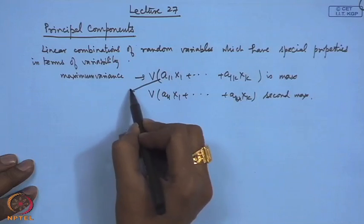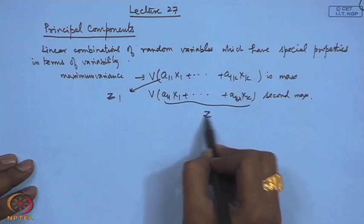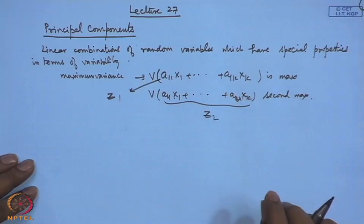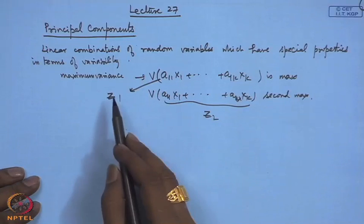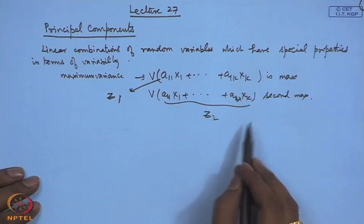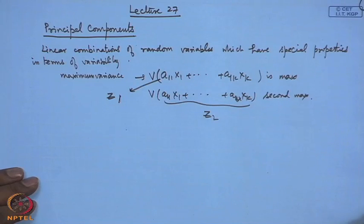In many practical studies it is found that some linear combinations will contribute more — they will have almost 90 or 99 percent of the variability, and very small variability will remain in all the other components. So we consider this as a new coordinate system: z₁, z₂, ..., zₖ. In place of the original variables x₁, x₂, ..., xₖ, we consider new variables z₁, z₂, ..., zₖ. If only z₁, z₂, z₃ contribute more than 99 percent of the variability, we may discard the other variables.